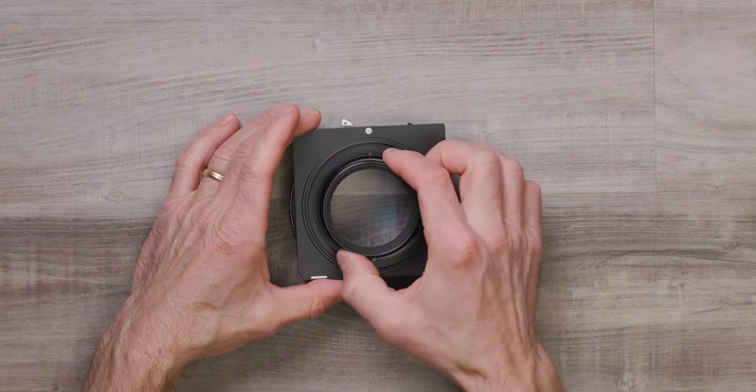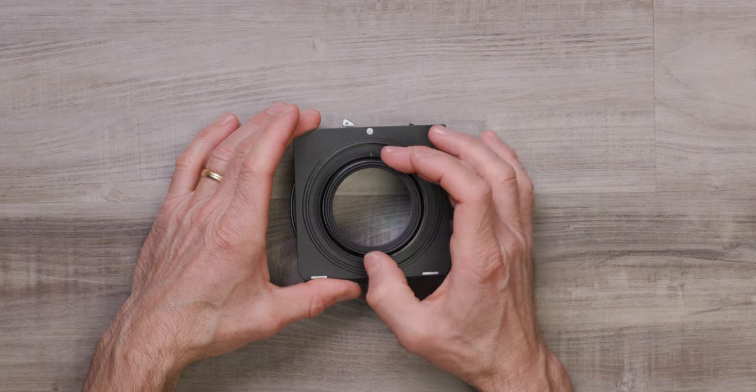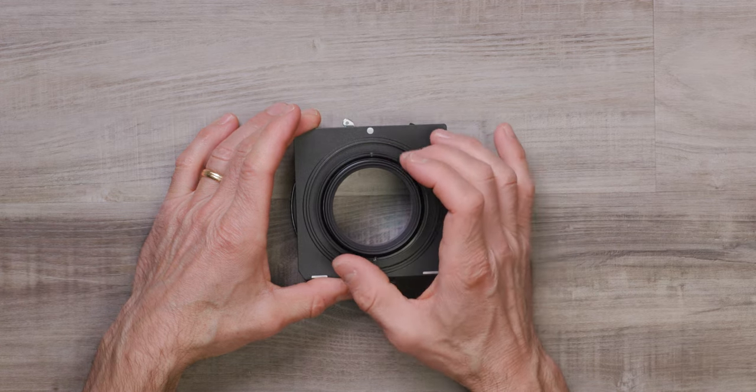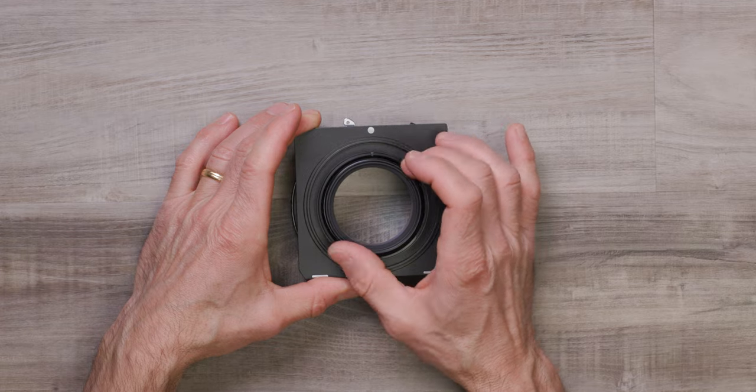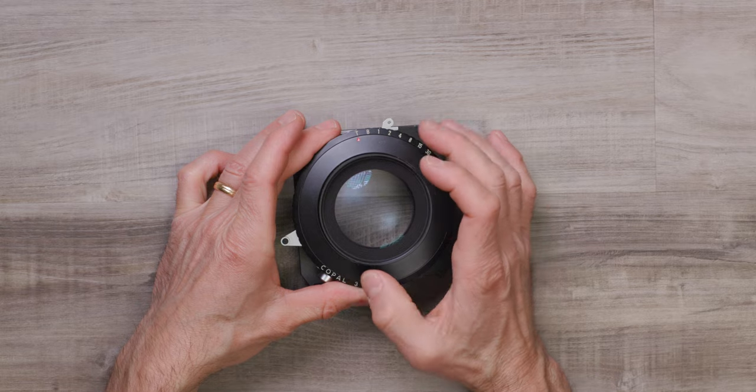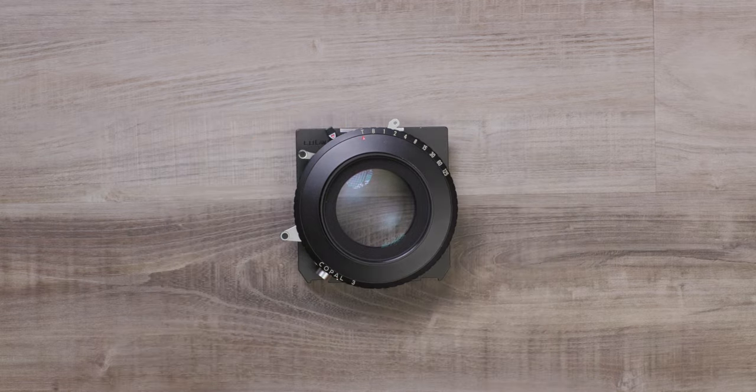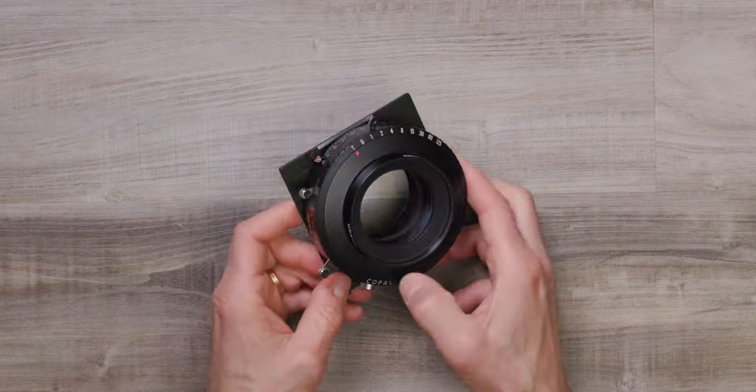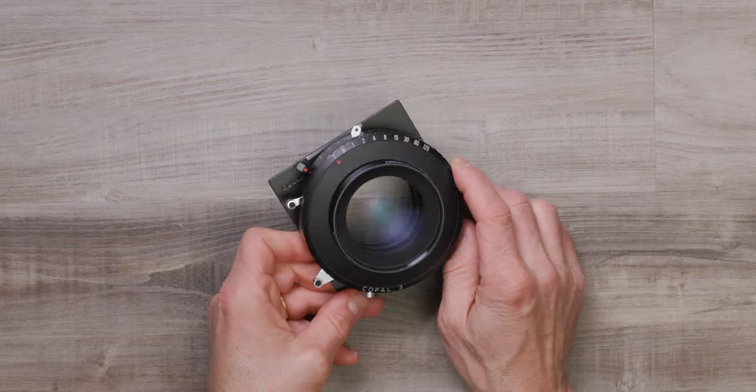Next I'll attach the rear lens element to the shutter. I like to start by threading counterclockwise to reduce the risk of cross threading followed by a clockwise direction. I finish the assembly by threading the front lens element in the same manner. Sweet! What an incredibly compact lens for this focal length that is ready for action.